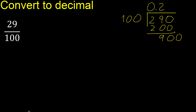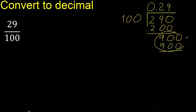The point is here. 100 multiplied by which number? Multiplied by 9 is exactly 900. Subtract: result is 0, therefore finish.